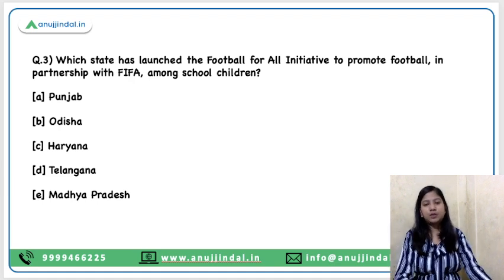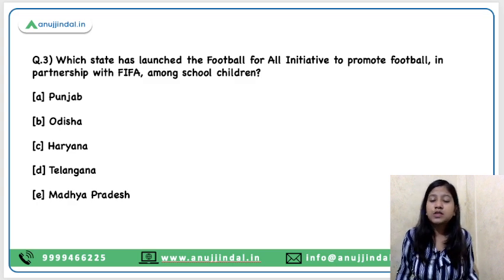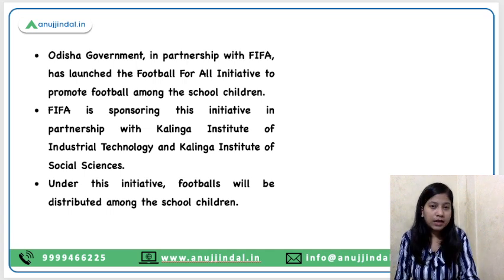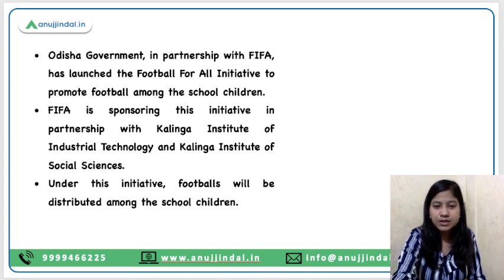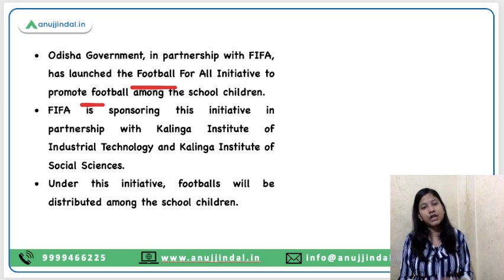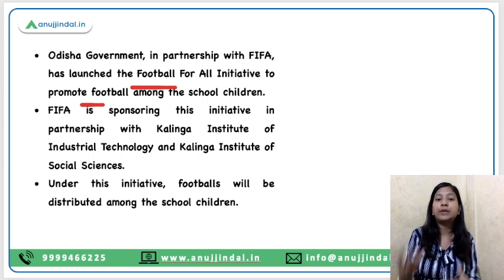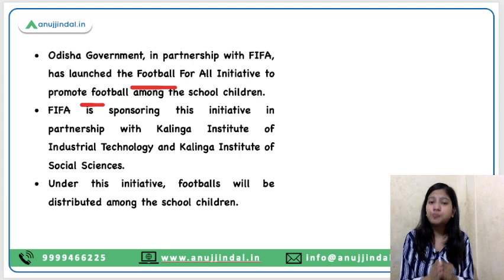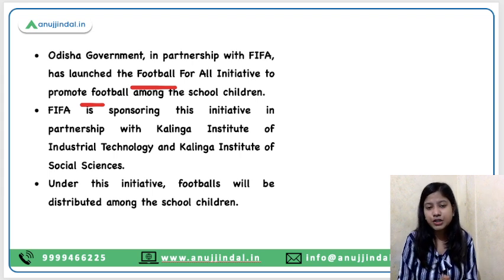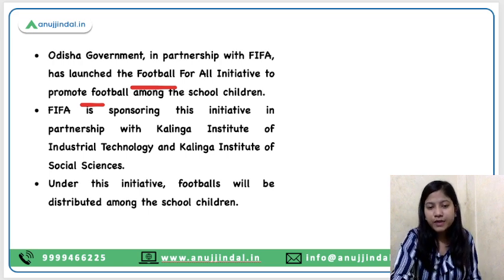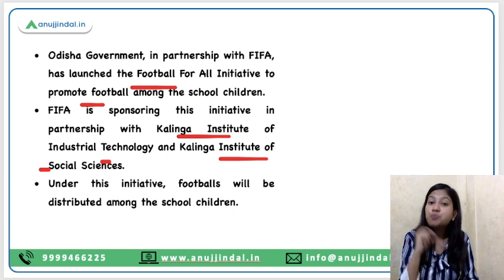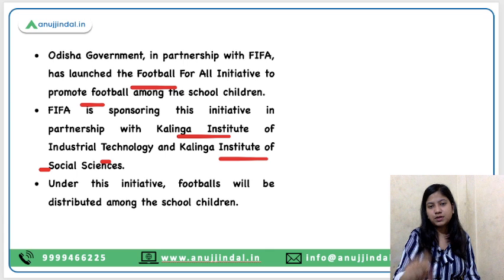Question number 3: Which state has launched the 'Football for All' initiative to promote football in partnership with FIFA among school children? Odisha is the right answer. The Chief Minister of Odisha is Naveen Patnaik. The Odisha government is very enthusiastic when it comes to hockey and other kinds of sport. The Odisha government has launched this Football for All initiative along with FIFA. Under this initiative, footballs will be distributed among school children so they get interested in the sport and it spreads across the state. FIFA is sponsoring the activities, along with two other partners: Kalinga Institute of Industrial Technology and Kalinga Institute of Social Sciences.